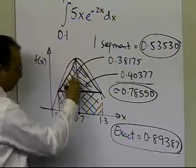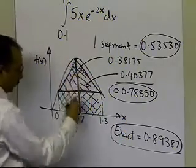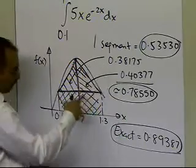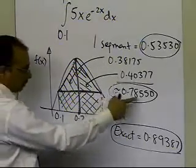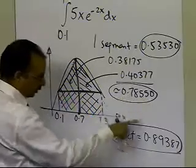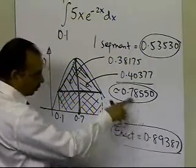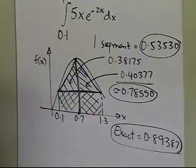I get two trapezoids now, the area of this trapezoid turns out to be this much, the area of this trapezoid is this much, and approximately it turns out to be this quantity here, and you see that it is much more closer to the exact value as opposed to the one-segment one.